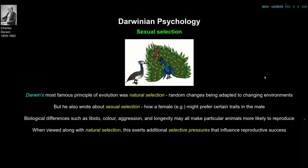Darwin's most famous principle was natural selection — random changes being adapted in individuals and populations to changing environments. He also wrote about sexual selection: for example, how a female peahen might prefer certain characters in the male peacock. This preference in the female exerts a selection pressure on the male — whether that male gets to reproduce is partly dependent on whether females find him attractive. Various biological differences such as libido, colour, aggression, or longevity may all make particular animals more likely to reproduce successfully. Alongside natural selection, these are additional selective pressures that influence reproductive success.